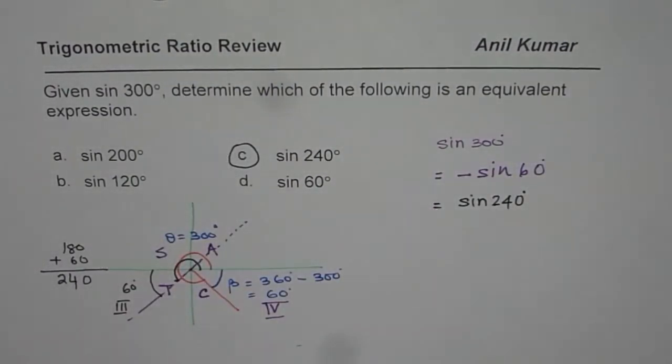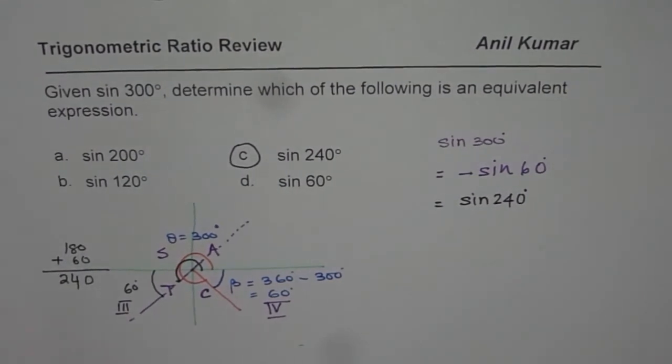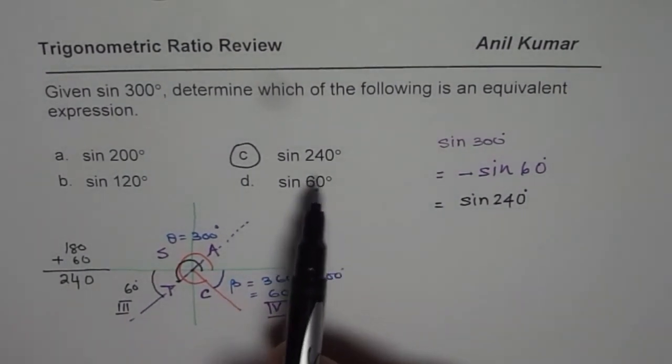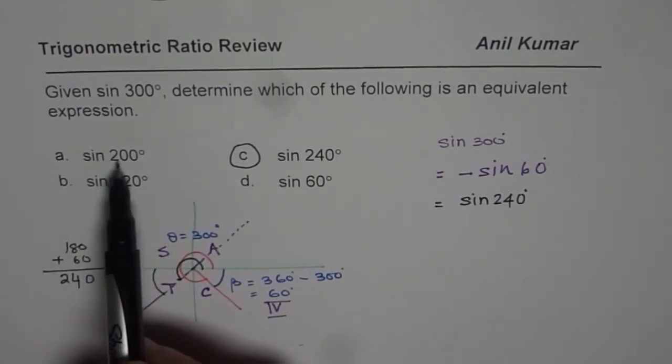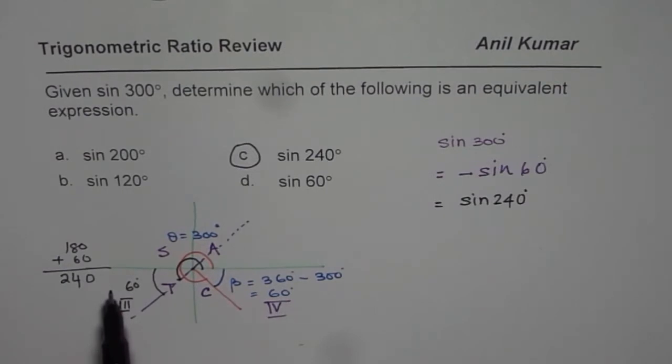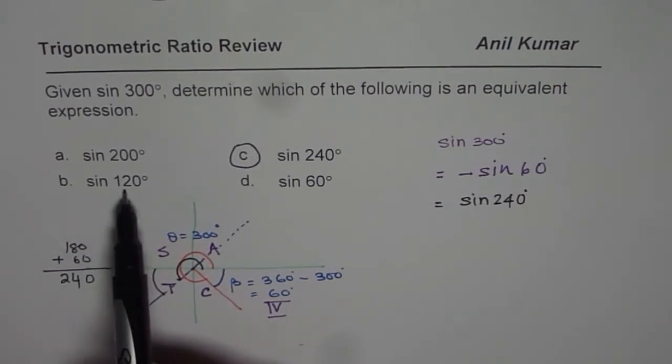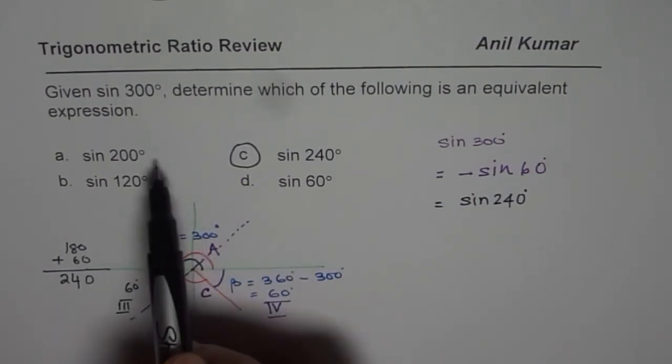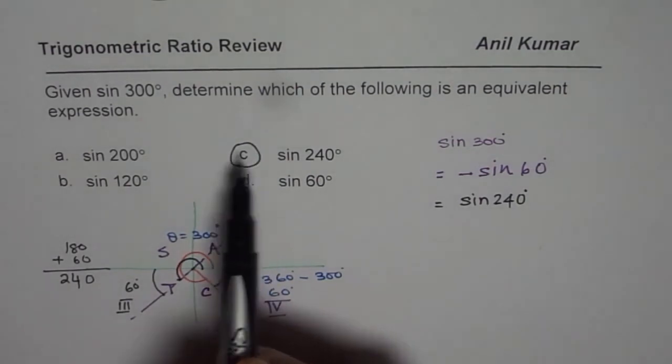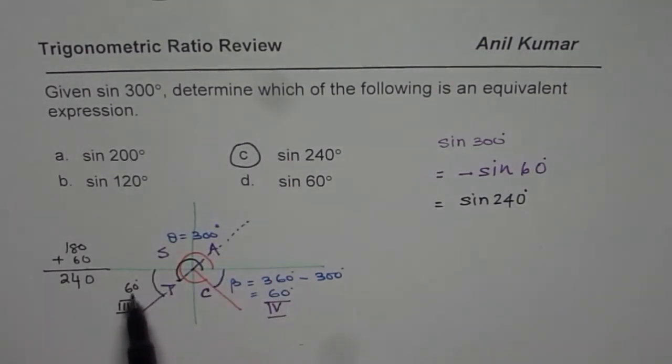That is one way of looking into it. The other way is also, you could have seen that since we are in quadrant 4, we are looking for a negative answer. Now 200 is in quadrant 3, could be a possible answer. 120 is in quadrant 2, it is not an answer. 60 is also not an answer. So we have choice between these two. Now acute angle 60 degrees helps us figure out which one is the right answer. So that is the kind of approach you should be taking to answer such questions on equivalent trigonometric expressions.